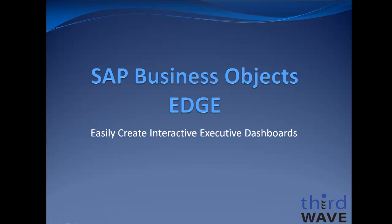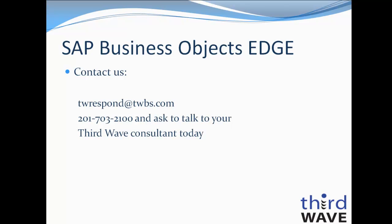I hope this demonstration of Business Objects Edge dashboards was helpful. Business Objects Edge is an end-to-end business intelligence solution for growing companies. It's packaged for rapid deployment and designed to adapt to changing requirements in your business' needs. When provided with increased data visibility and alignment, your company will be more agile and better able to meet upcoming growth and profitability objectives. Third Wave Business Systems can quickly help you deploy this powerful platform. Please contact us at TWRespond@TWBS.com or call 201-703-2100 to talk to your Third Wave Consultant today.